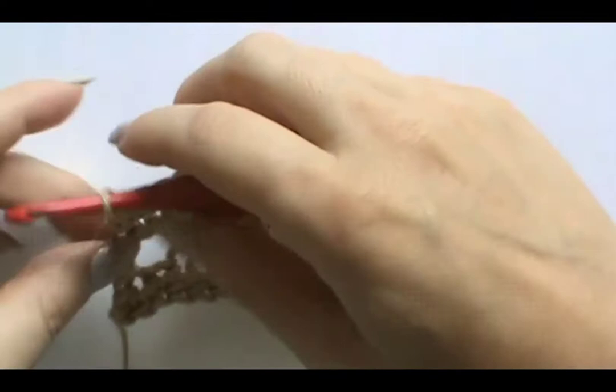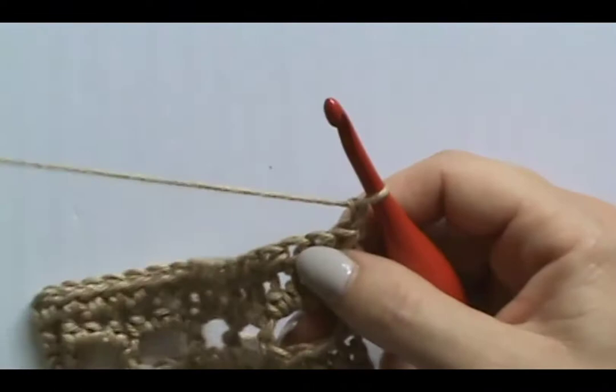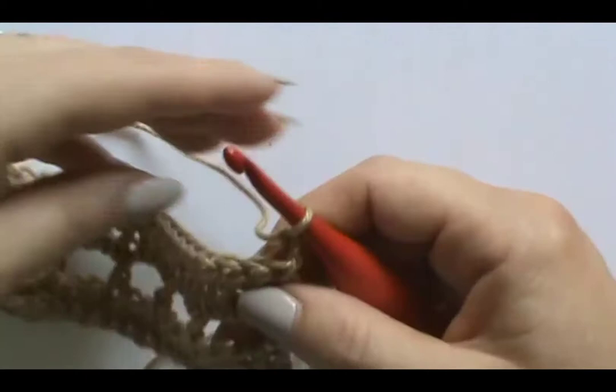This pattern uses short rows in order to create some shaping. To make a short row, you just begin by working a stitch like normal. Each of the short rows starts with half double crochet stitches and ends in single crochet.